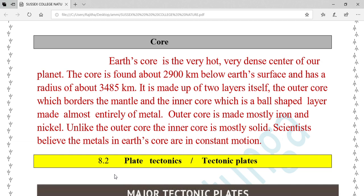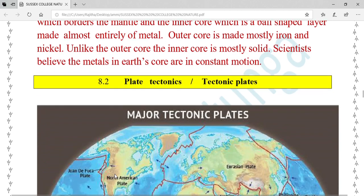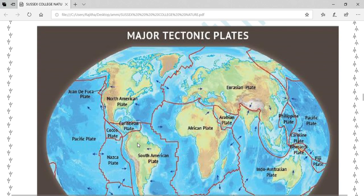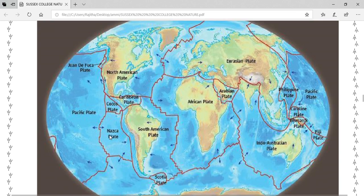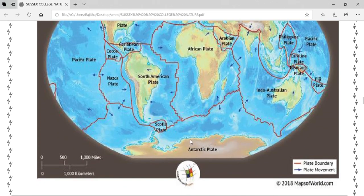Now we are going to discuss plate tectonics and tectonic plates. Look at this picture. Here you can see some tectonic plates: North American plate, Caribbean plate, South American plate, African plate, Arabian plate, Eurasian plate, Indo-Australian plate, Pacific plate, and Antarctic plate.